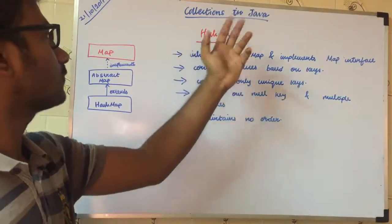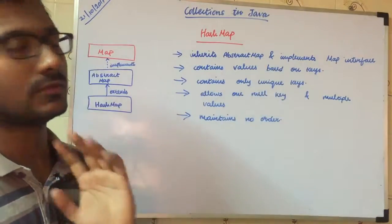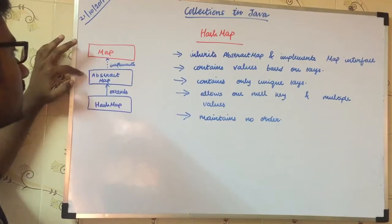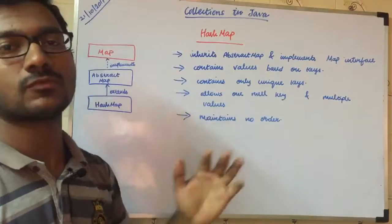First, HashMap inherits abstract map and implements map interface. HashMap extends abstract map. At the same time, it implements map interface. So, map interface properties are in HashMap.